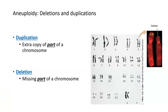Chromosomal abnormalities can also apply to only parts of a chromosome rather than having a full extra copy or missing an entire copy. Some examples of aneuploidies where only part of the chromosome is affected are deletions and duplications. In a duplication, there is an extra copy of part of a chromosome, so a chromosome might be a little bit longer on either end than its counterpart. In a deletion, a chromosome might be missing a small part or piece.